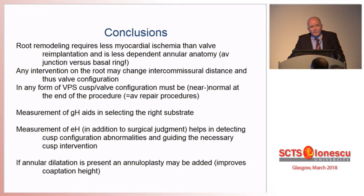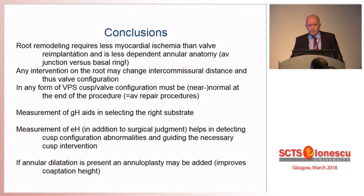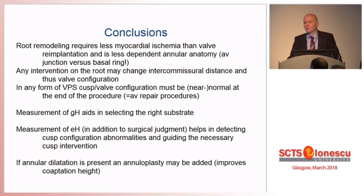Let me summarize. I focused here on root remodeling because it requires less myocardial ischemia — this has been the main reason it's been my primary technique for the last 15 years. The important message is: any intervention on the root, even a seemingly simple procedure like sinotubular junction remodeling — a graft sutured to the sinotubular junction — may change intercommissural distance and thus valve configuration, potentially inducing prolapse or restriction. In any form of valve-preserving surgery, cusp configuration must be near-normal — ideally normal — at the end of the operation. Valve-preserving root replacement should be considered not an aortic operation, but an aortic valve repair procedure.